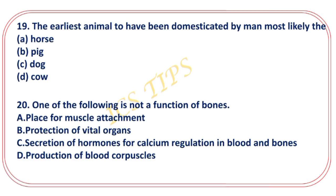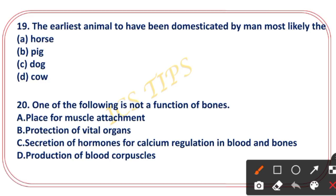The earliest animal to have been domesticated by man was most likely the dog. The dog was the first animal to be domesticated by man.